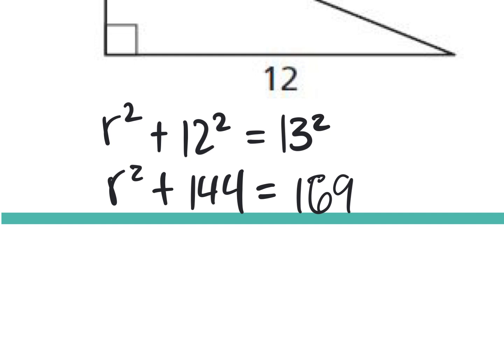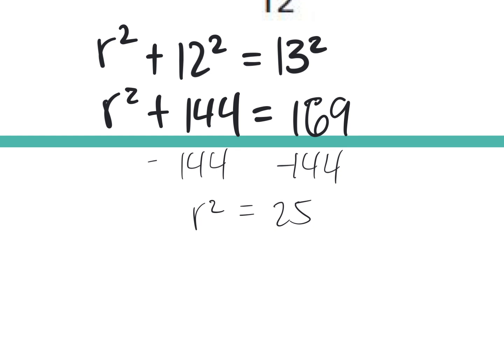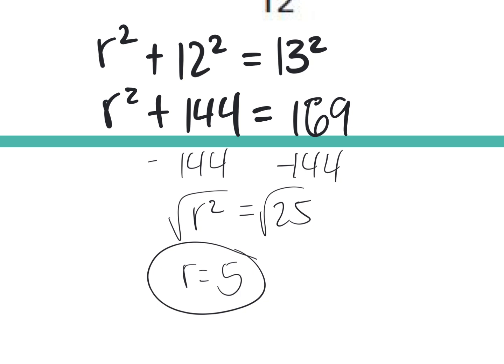Then what do I do? Subtract the 144. Very good, John. What do I get? 25 equals R squared. Then what do I do? Square root of both sides, and we get R equals 5. How many of us got that 5? Raise your hands. If we didn't, what questions do we have? Talk to me.